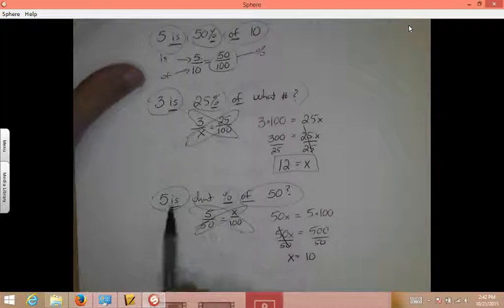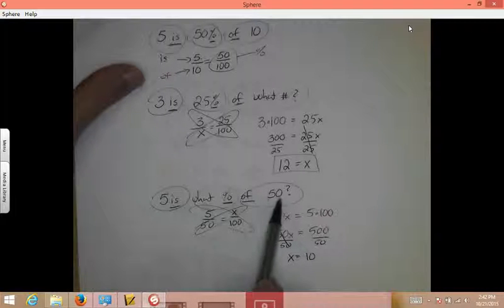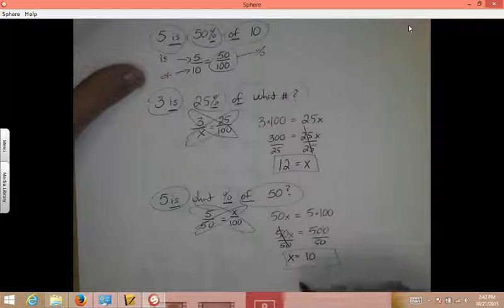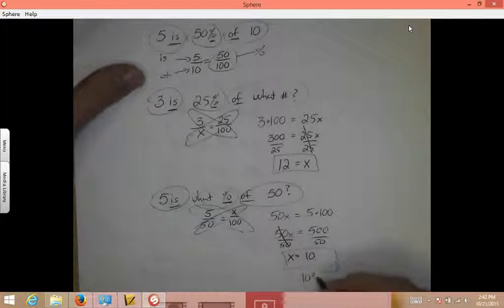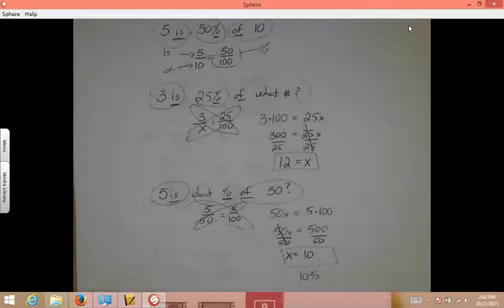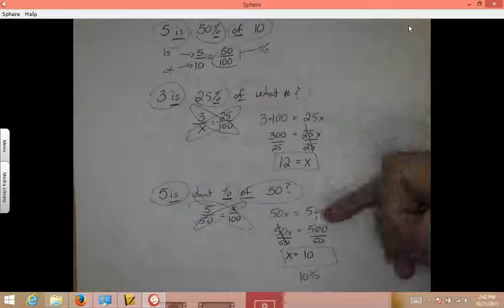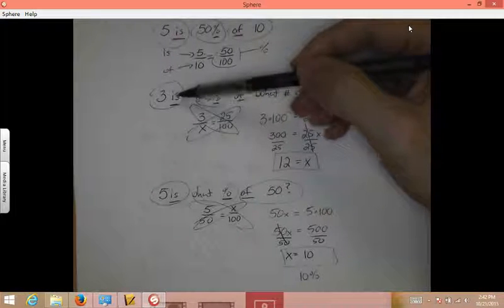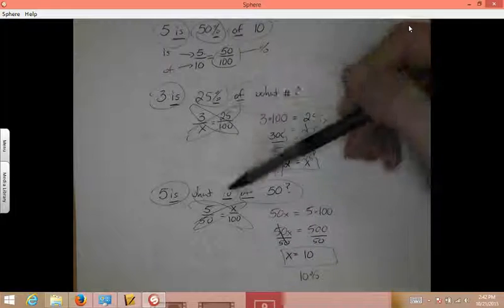So it says five is what percent of fifty? Well, we know it's ten. So five is ten percent of fifty. So ten percent is the answer. And if you can do these problems, you can do them all. You're either going to be missing your is, or you'll be missing your of, or you'll be missing your percent. And that is the percent proportion.